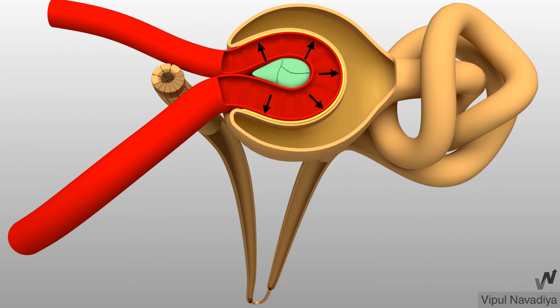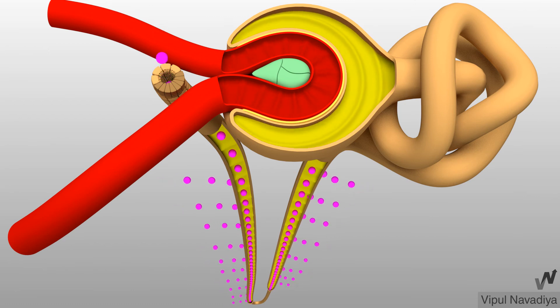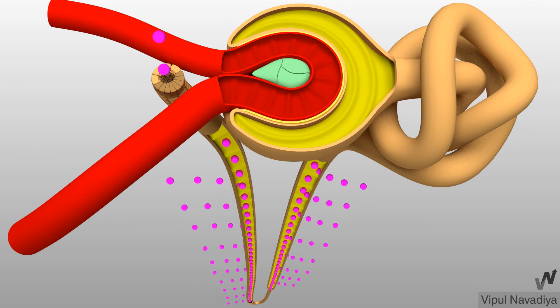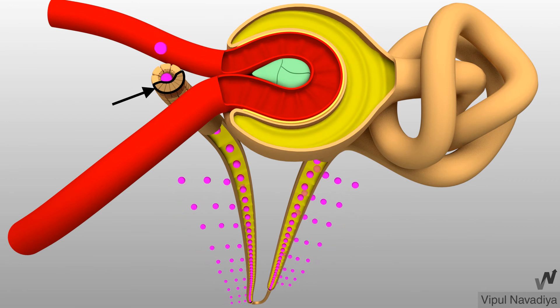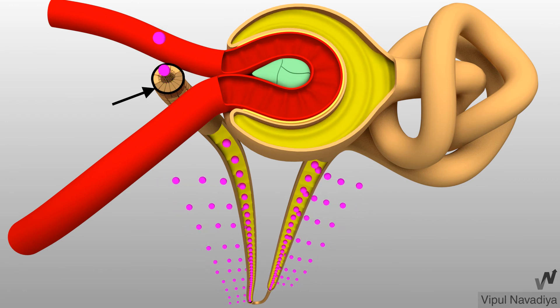As you can see, after glomerular filtration, filtrate passes through the renal tubule. The tubule reabsorbs various substances including sodium chloride. These macula densa cells over here sense sodium chloride concentration in fluid flowing through this portion of the tubule.